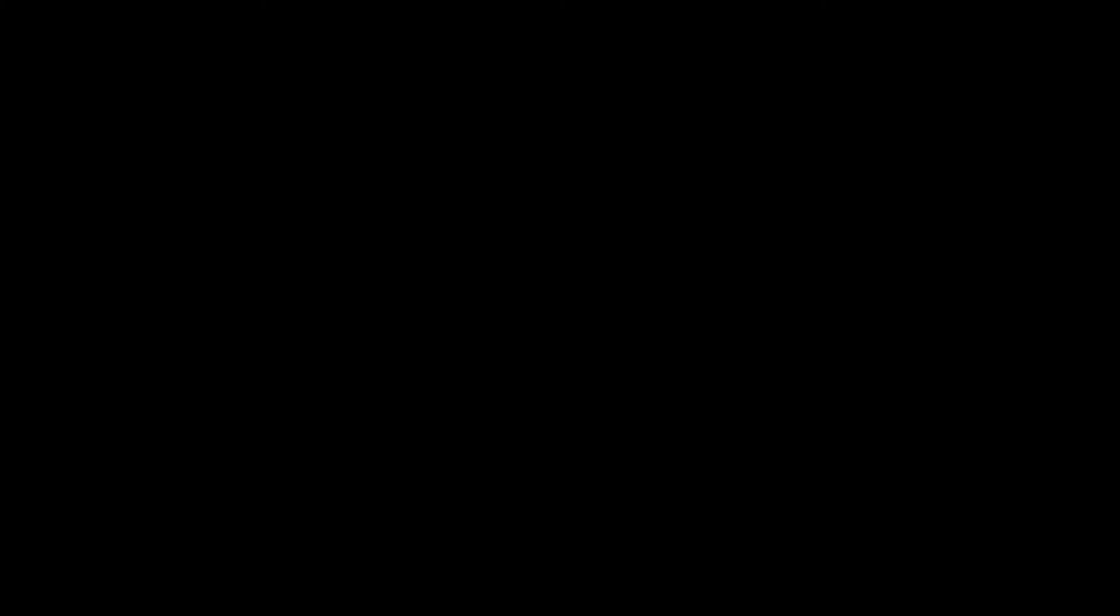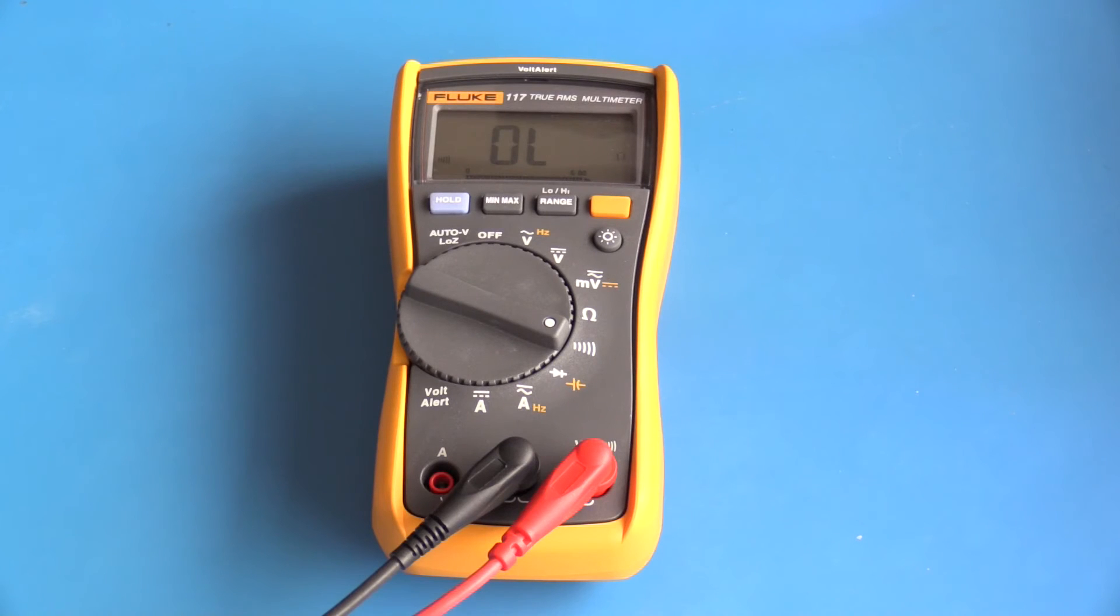The Fluke 117 has a dedicated continuity function. The continuity function on the Fluke 117 is very, very quick - it's a very nice loud beep. Using the diode function, I can place my black lead on the cathode, the red lead on the anode, and here I'm measuring a voltage drop of 0.362. If I reverse bias that diode with the positive lead on the cathode and the negative lead on the anode, I get no reading, so I know that is a good diode.